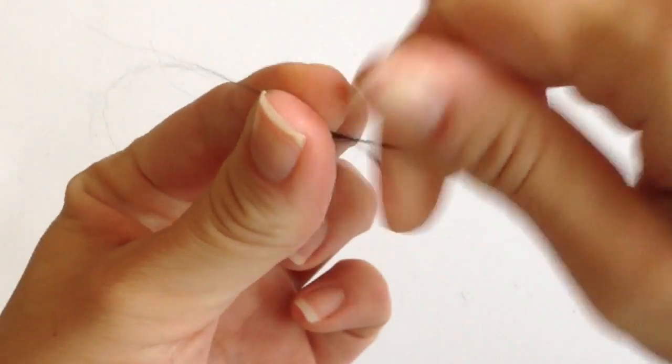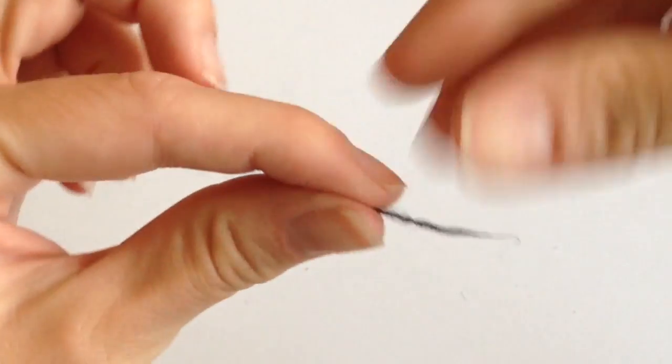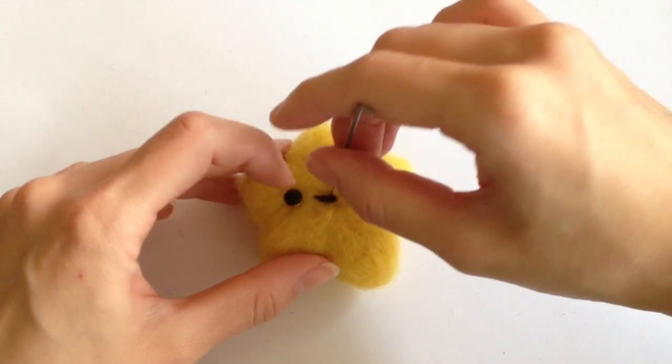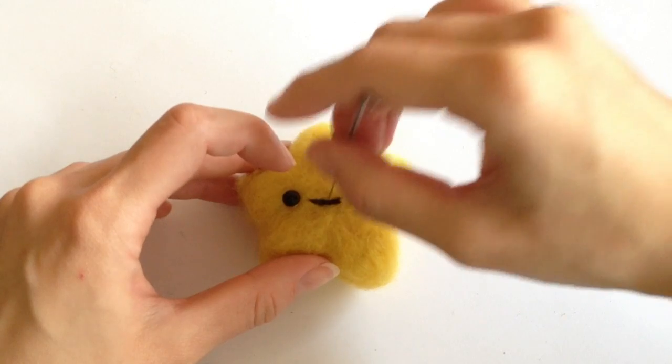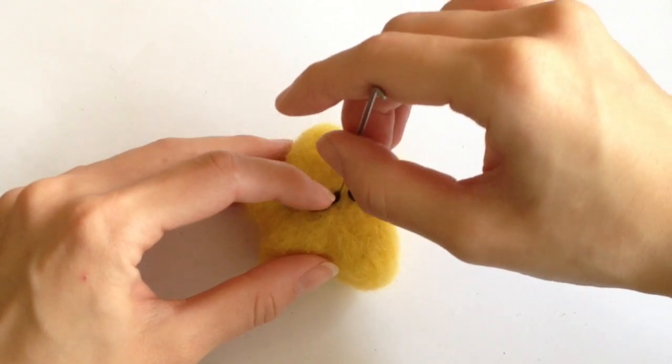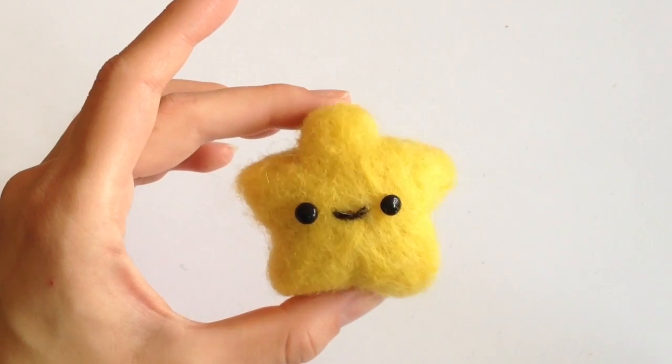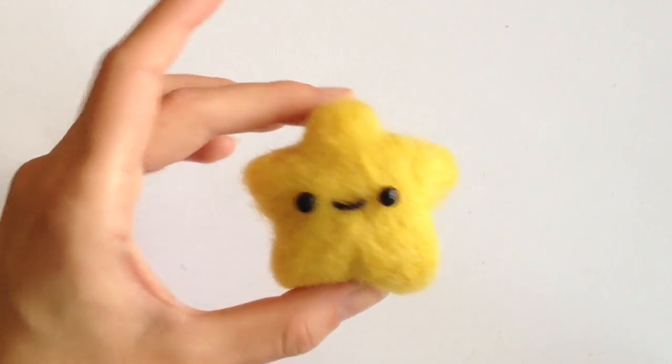Taking some black felting clay, I'm going to roll this in my finger to form the little mouth. Once you are happy with the size, go ahead and attach it onto the center of the face. The nice thing about needle felting is it gives you pretty good precision as to where you want each piece to go.